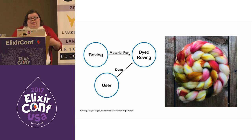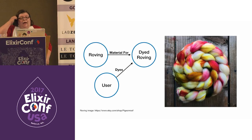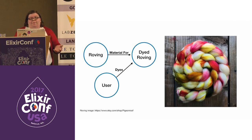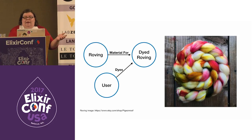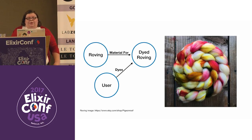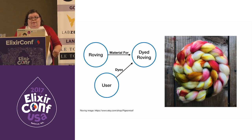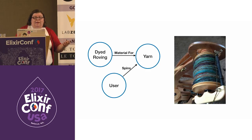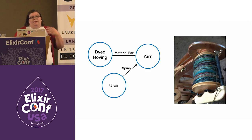After carding, the wool is referred to as roving and it can be dyed. There are lots of ways to dye the roving, and one or more people may be involved in this process. The carding node from the previous step is now material for the dyed roving, and we have a user who dyes the roving to make the dyed roving.